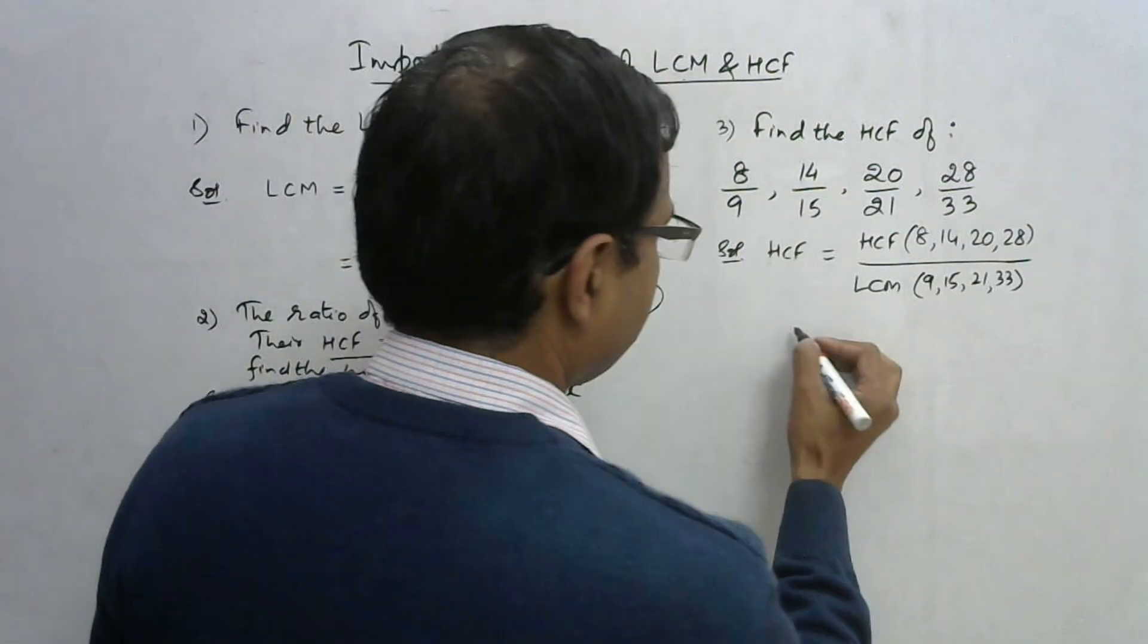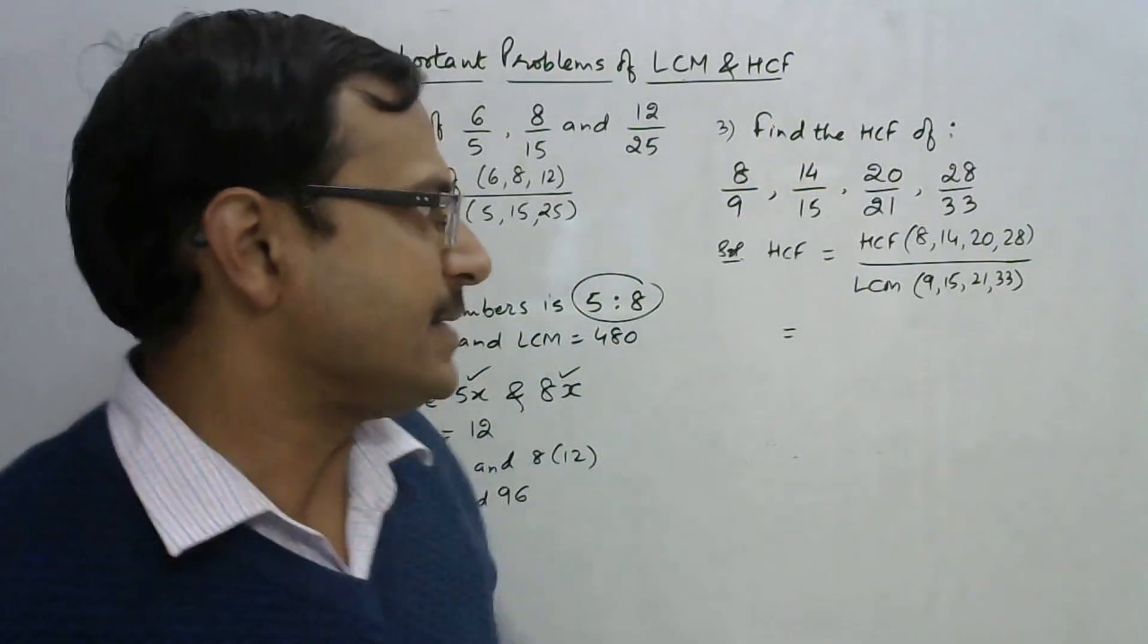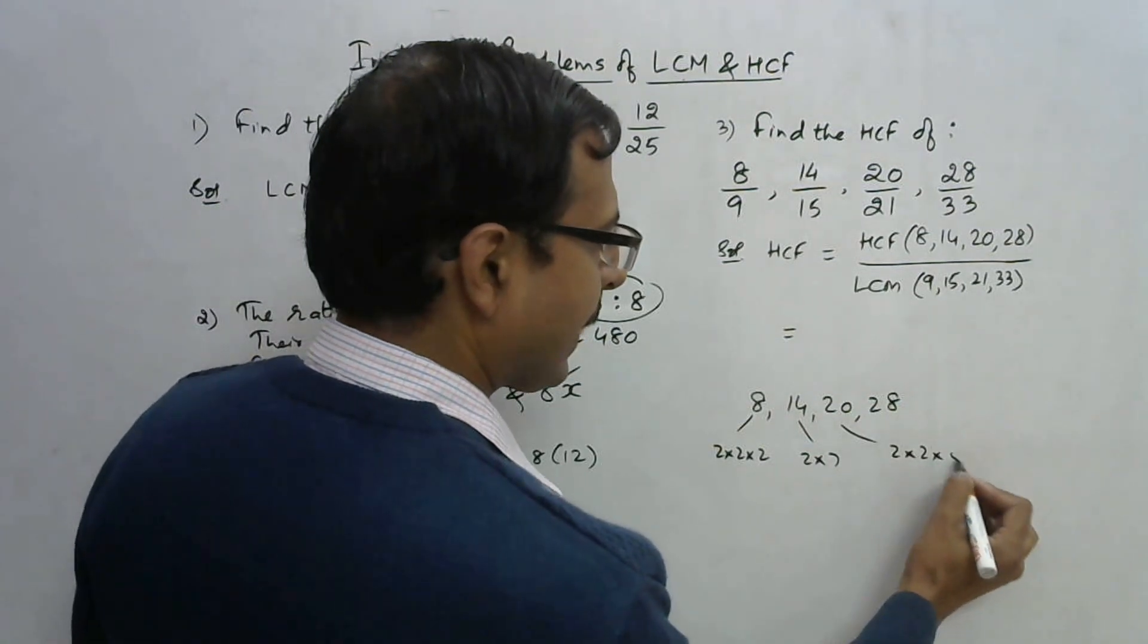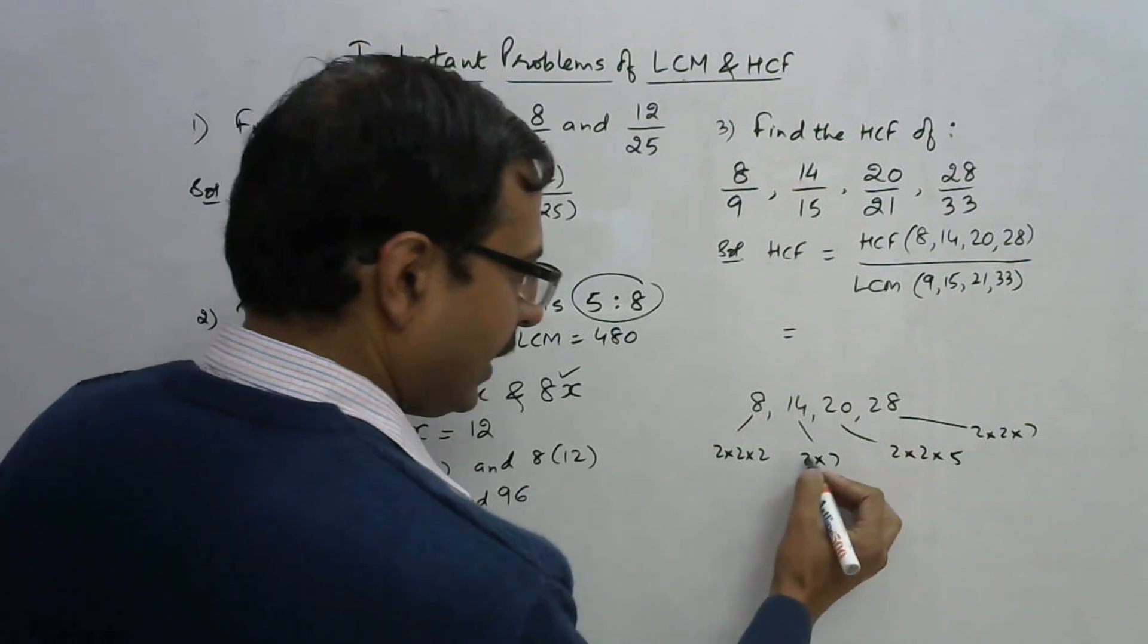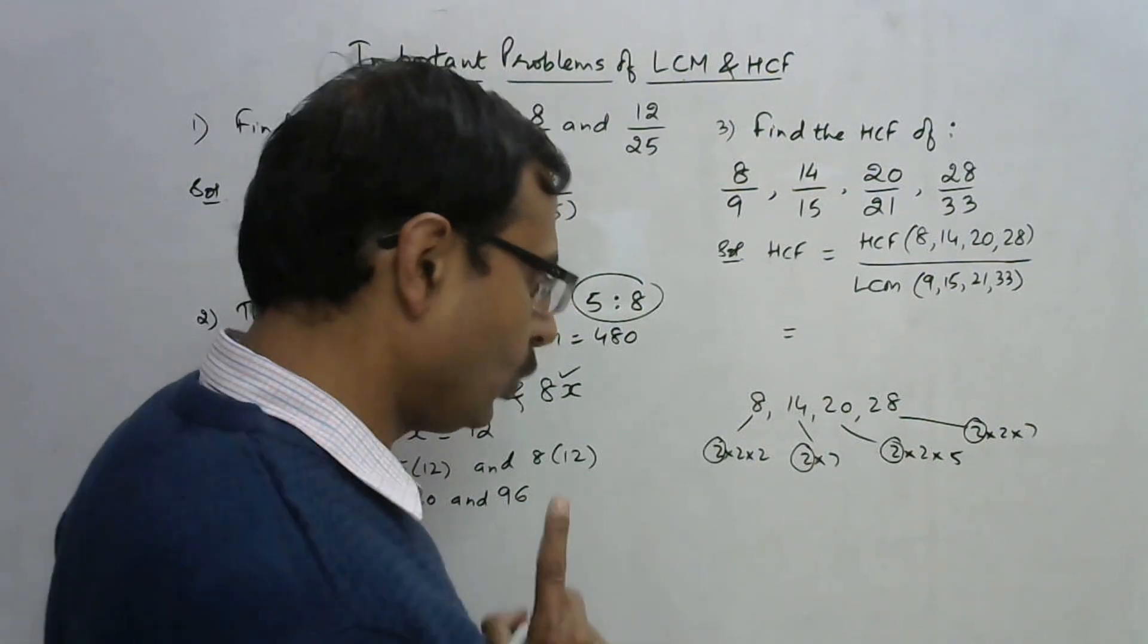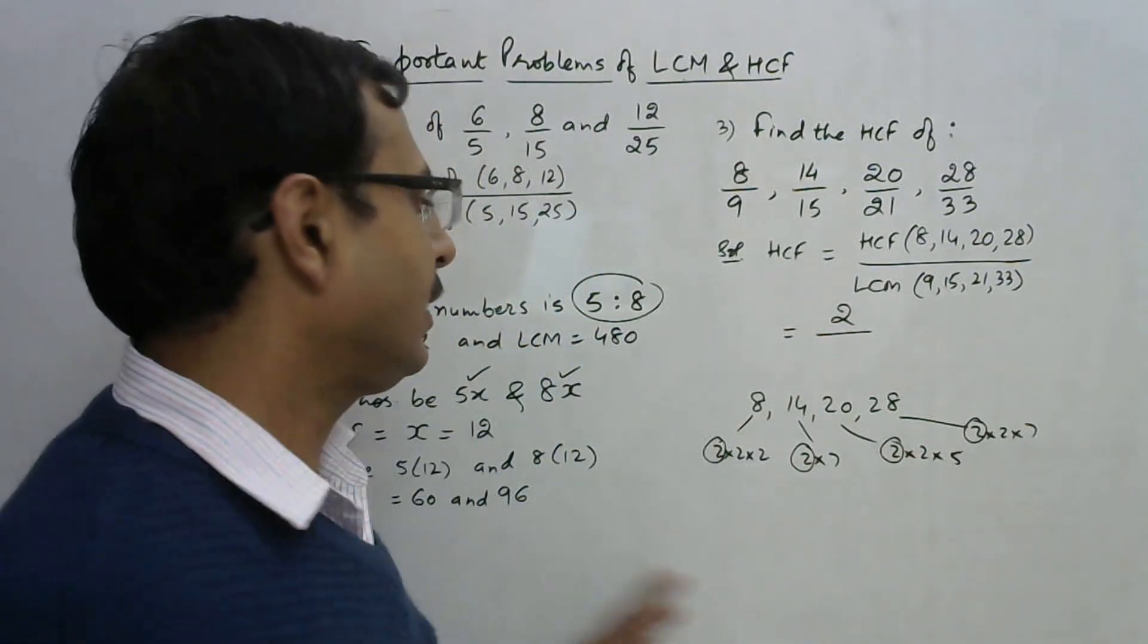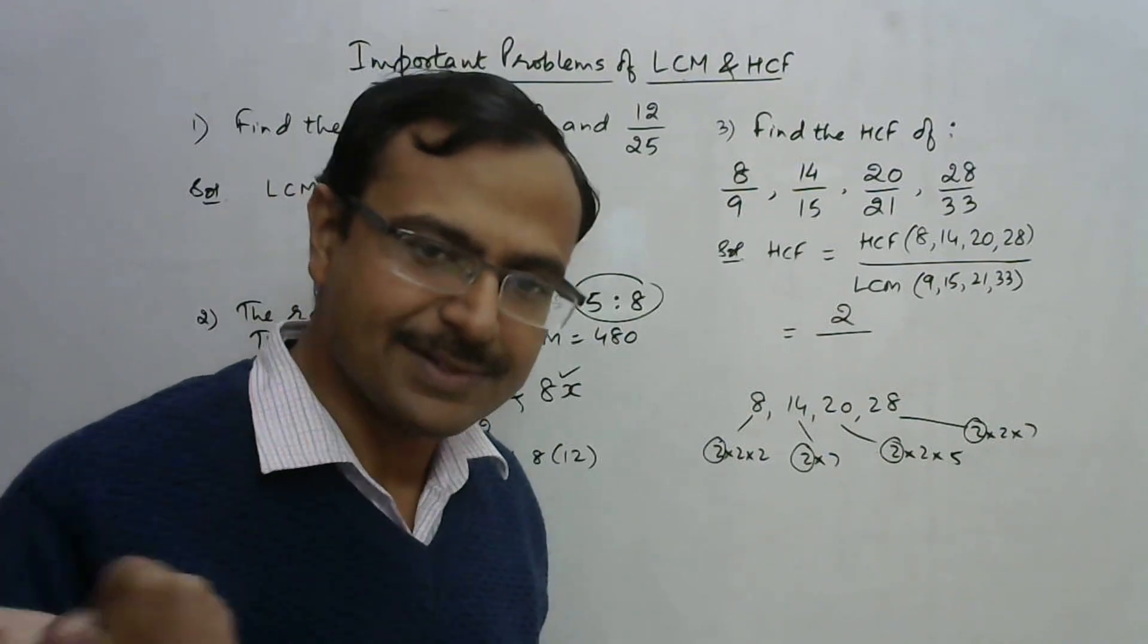How do you find the HCF of these numbers 8, 14, 20, 28? This is 2 × 2 × 2, this is 2 × 7, this is 2 × 2 × 5, and 28 is 2 × 2 × 7. There is a single 2 which is common in all numbers, so the HCF will contain that common factor 2. Apart from that there is nothing else common, so the HCF of these numbers is only 2.